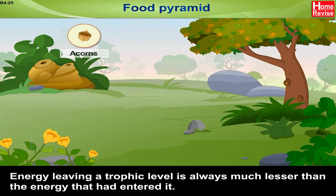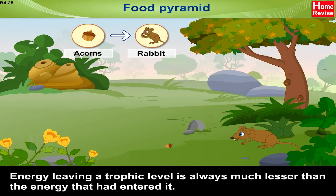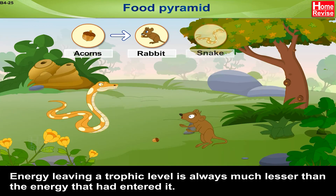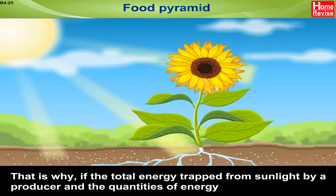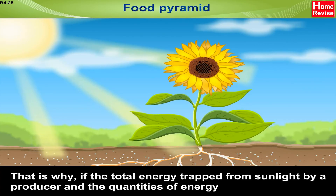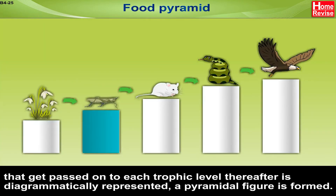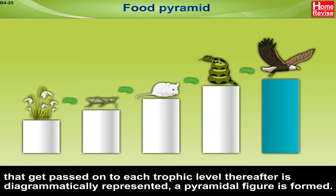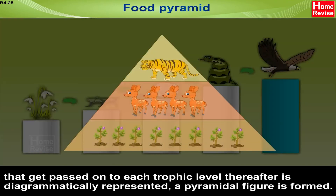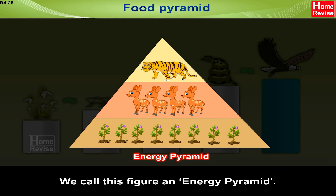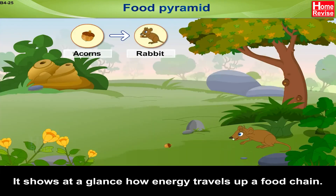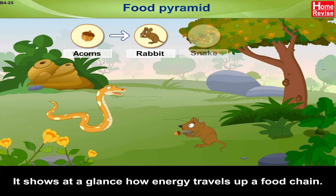Energy leaving a trophic level is always much less than the energy that entered it. That is why, if the total energy trapped from sunlight by a producer and the quantities of energy passed on to each trophic level thereafter are diagrammatically represented, a pyramidal figure is formed. We call this figure an energy pyramid. It shows at a glance how energy travels up a food chain.